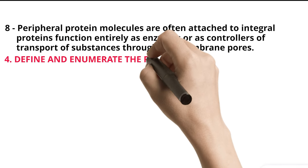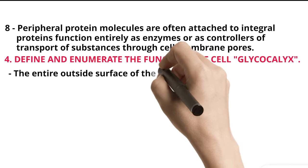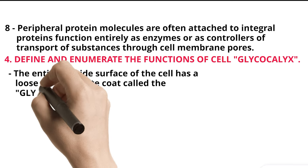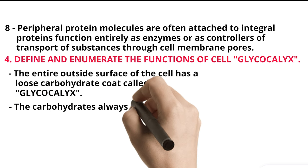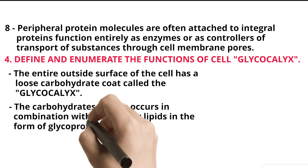4. Define and enumerate the functions of cell glycocalyx. The entire outside surface of the cell has a loose carbohydrate coat called the glycocalyx. The carbohydrates always occur in combination with proteins or lipids in the form of glycoprotein or glycolipids.